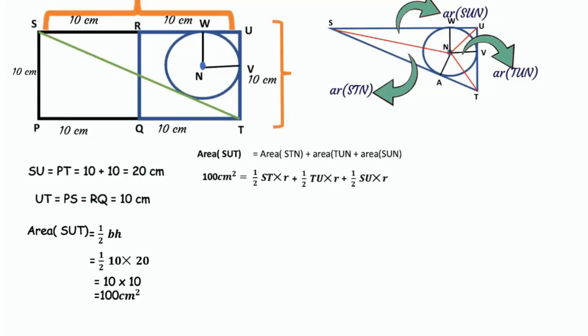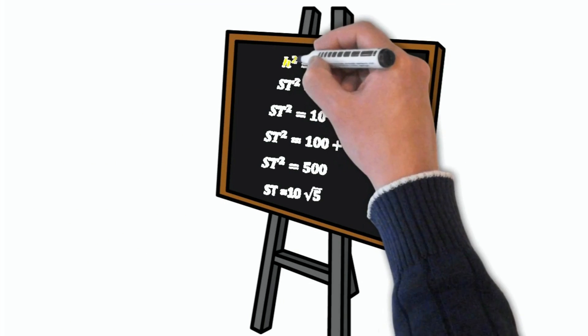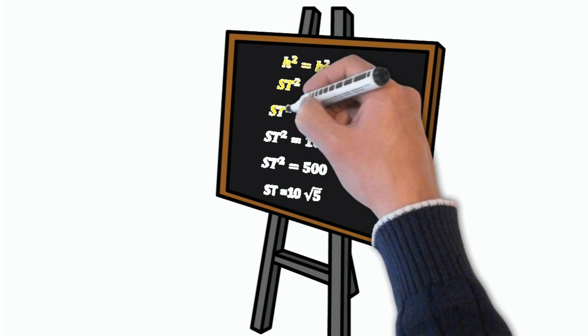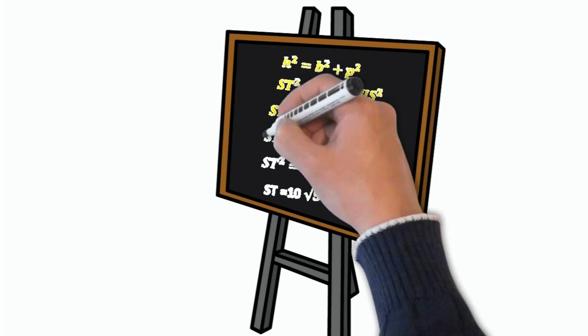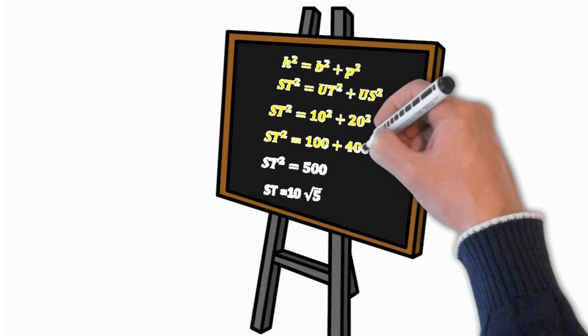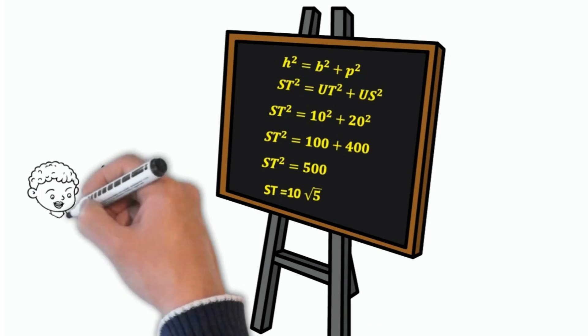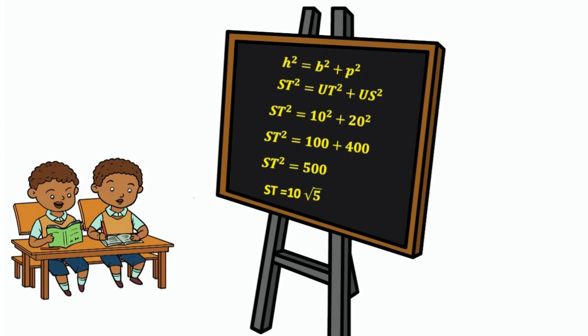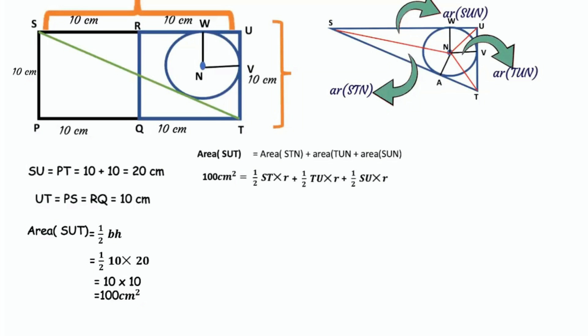Now let us substitute the values. In triangle SUT we have to get length of hypotenuse. Hypotenuse square equals base square plus perpendicular square. After calculations we get ST equals 10 root 5. Let's put the values. 100 cm square equals half into 10 root 5 into R plus half into 10 into R plus half into 20 into R.